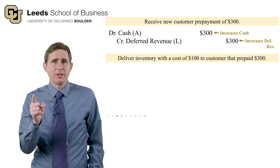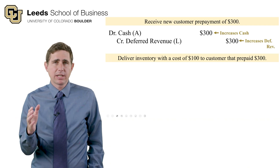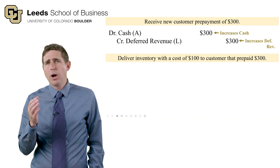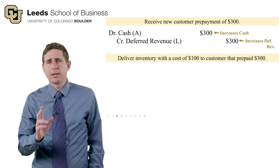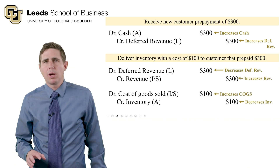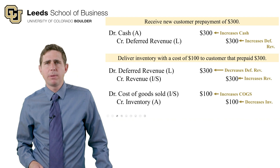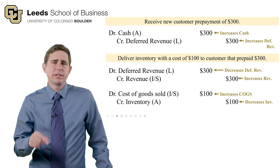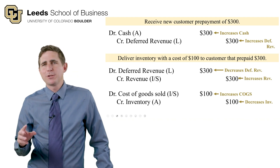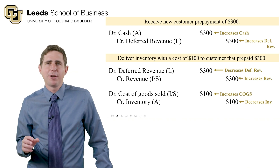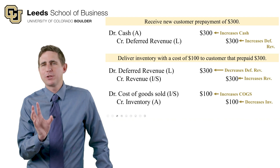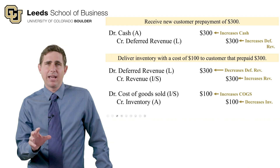We have a new obligation: a customer paid us and expects delivery in the future, so we set up deferred revenue — a liability — which needs to go up by $300 with a credit. When we then deliver the inventory to that customer, we earn the $300 as revenue with a credit, and we decrease deferred revenue — settling our obligation — with a debit of $300. We also lose our remaining $100 of inventory, so we credit inventory by $100 to reduce it to zero, and debit cost of goods sold to increase that expense by another $100.